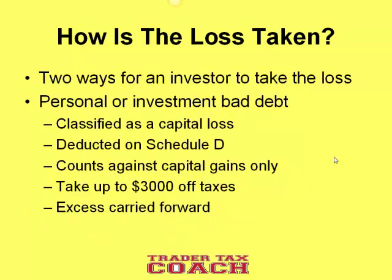For investors, it's a little bit different. Investors have two ways to account for this loss. The first way is to classify it as a personal or investment bad debt. This classifies the loss as a capital loss and gets deducted on a Schedule D. It counts against capital gains only. Then you can take up to an additional $3,000 off of your taxes. If there's any excess, it gets carried forward and, again, counts against capital gains only.